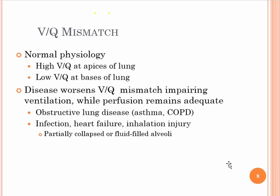For normal physiology, talking about the different zones in the lungs: the high ventilation-perfusion ratio is at the apices of the lung. The VQ ratio — where V is ventilation and Q is perfusion or blood flow — is highest at the apices. In other words, you have high ventilation there and low perfusion, so that number would be the highest. The lowest ventilation is at the base of the lungs.